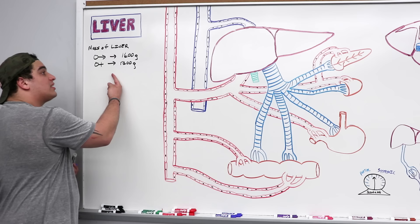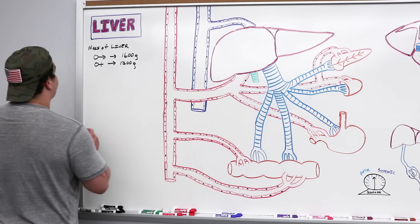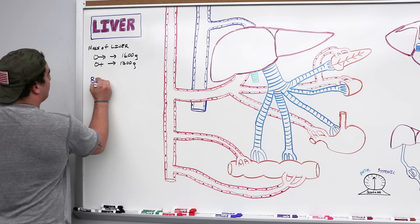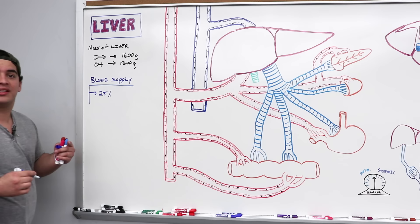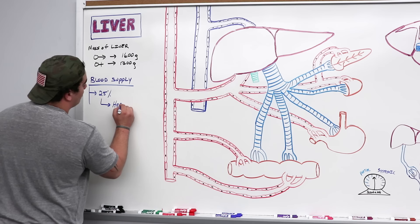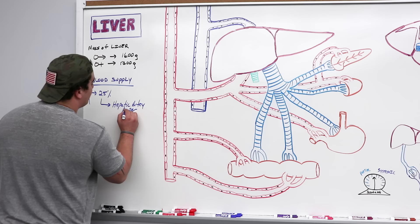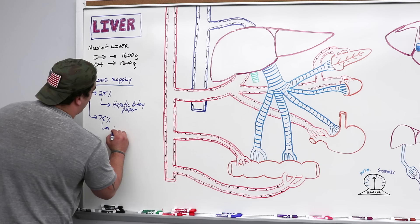Now let's talk about the blood supply of the liver. There are two blood supplies. One accounts for only 25% of the actual blood supply, carried by the hepatic artery proper. The other accounts for 75% of actual blood flow going into the liver, and that is the portal vein.